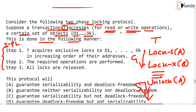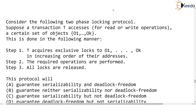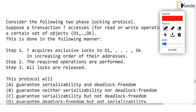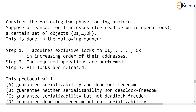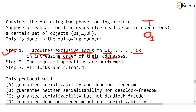This is two-phase locking protocol. In the question, step one states: T acquires exclusive locks on O1 to Ok in increasing order of their addresses. By addresses, we mean you can think of them as indexes. So transaction T acquires a lock on O1 first, then O2, then O3, up to Ok.